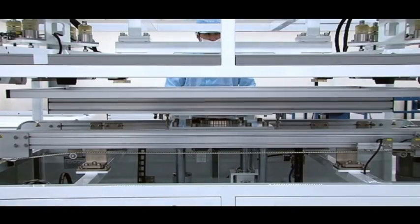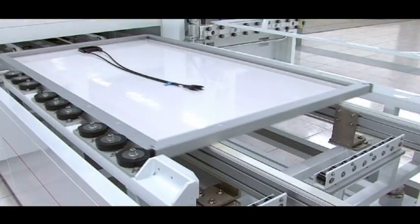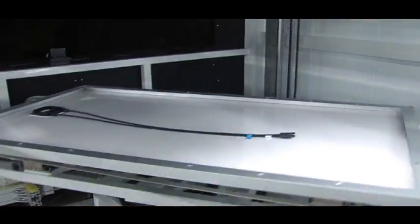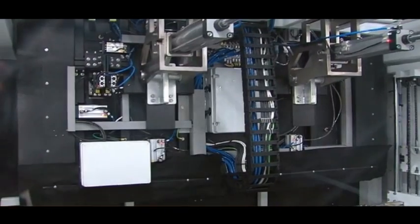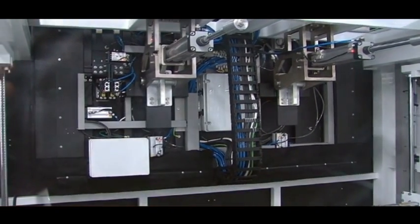Only when the laminate has passed all quality checks is it fitted with sealing tape and our sturdy frame to form a Winayco module. A Paisen flasher then checks the capability of every single Winayco module.